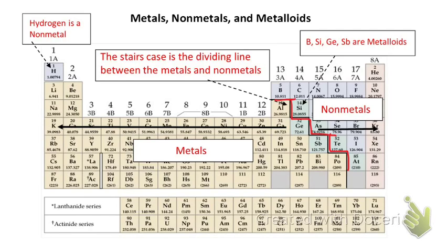And it will always be between the element boron and aluminum. So that's where the staircase begins. And then you just kind of follow it down and make that staircase. So everything to the left of that staircase is a metal, and everything to the right of that staircase is a non-metal. All right. Now, there's a few elements that fit along that staircase, some odd unique ones. And those ones are called metalloids.